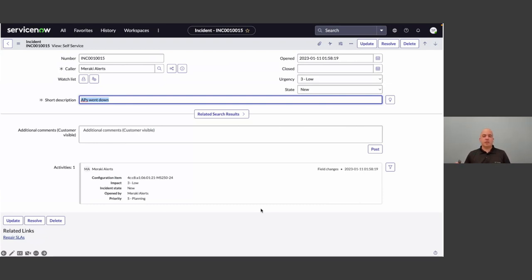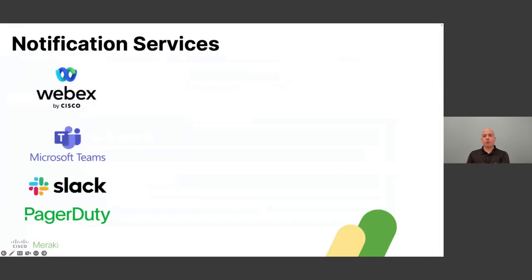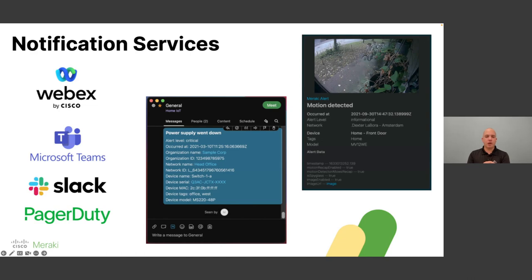Not all of you are working with ServiceNow, but you'd still like to get notifications when something happens. That's why, for webhook templates, we created built-in integrations into Cisco Webex, Microsoft Teams, Slack, and PagerDuty. You can craft your message and when something happens — whether it's a movement on a security camera, a power supply going down, or an access point going down — we'll send that message to the notification service of your choice. Through webhook templates, you can integrate with whatever service you'd like, as long as it can receive webhook alerts.